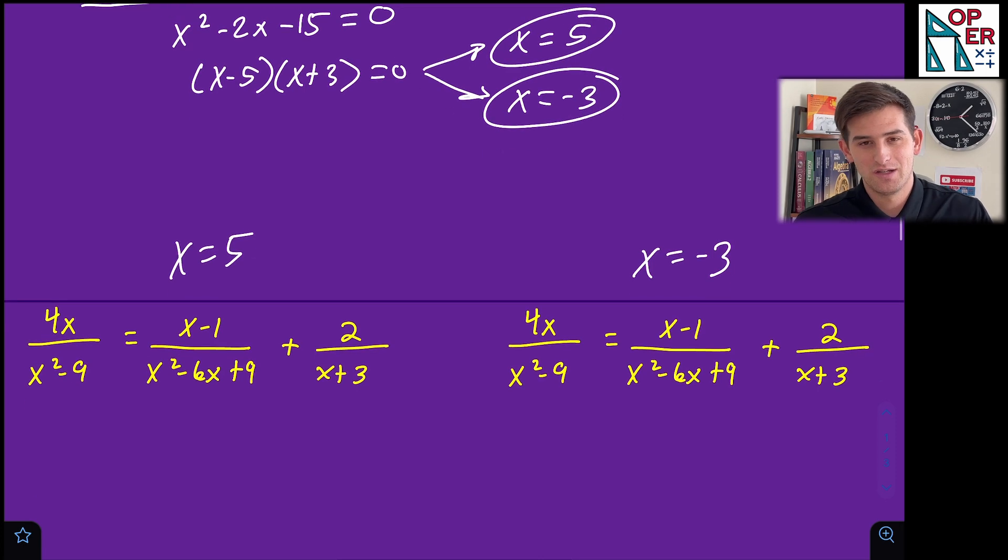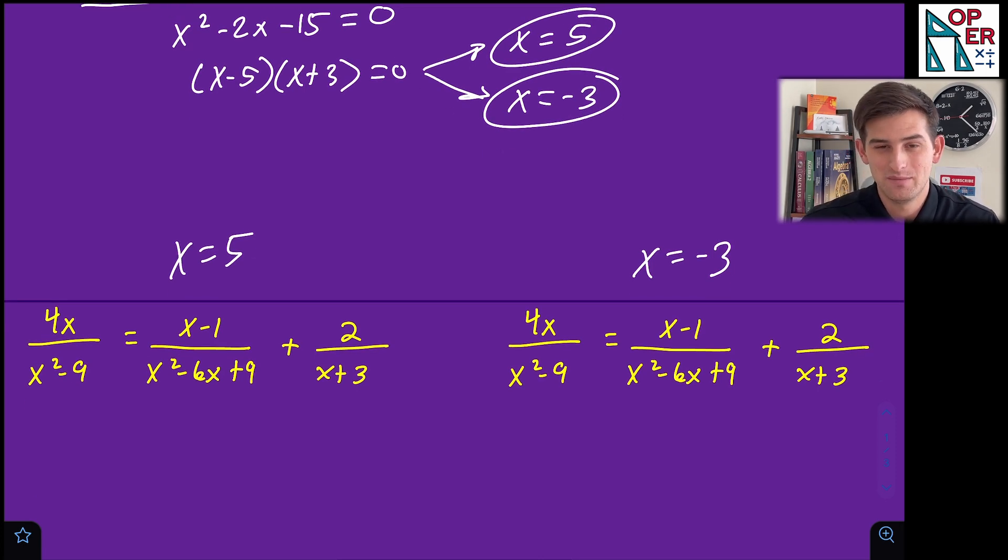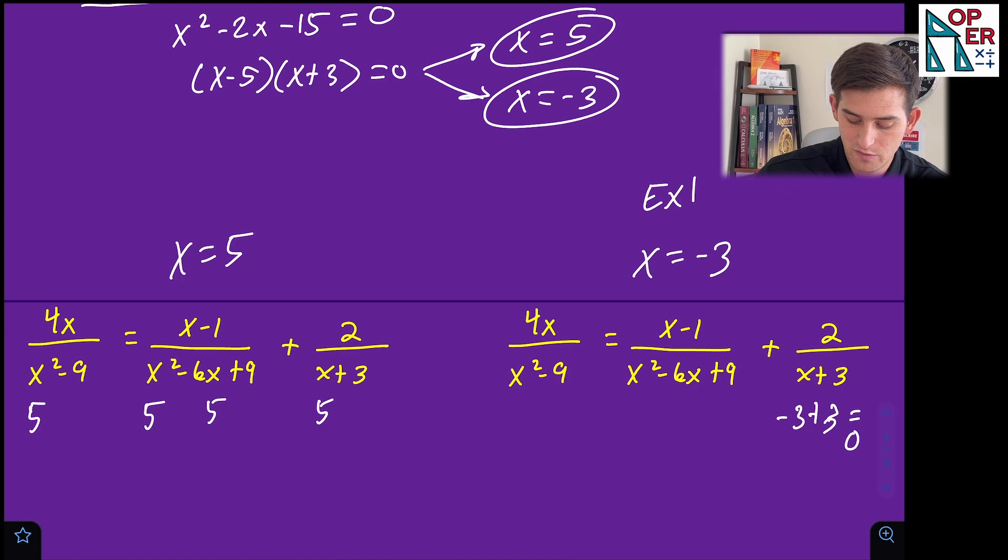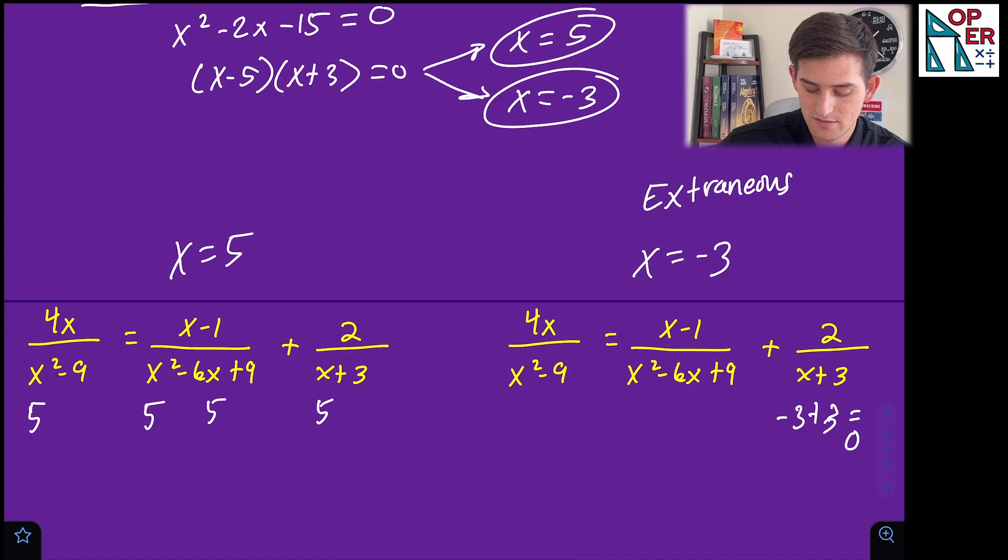Okay, so now we are going to be able to quickly see that we really don't have to plug them in because one of them is clearly going to make our denominator zero. So if I look at five and I plug five in for X here, here, here, and here, notice that nowhere along there am I going to get a value of zero. Well, for negative three, if I plug in negative three right here, negative three plus three is zero, right? So that's going to give me undefined. So we're going to say that X is equal to negative three would be our extraneous solution.